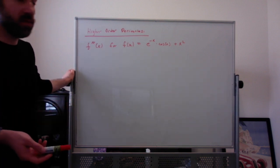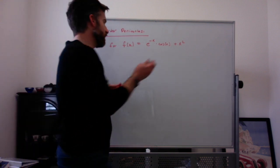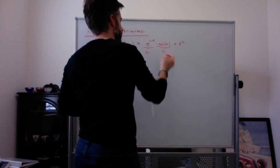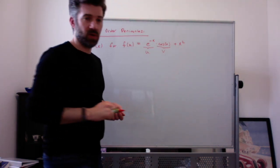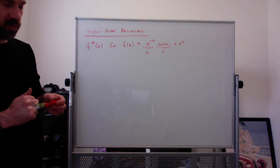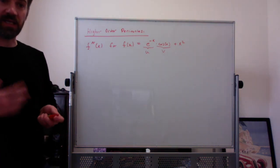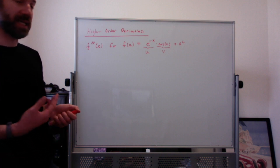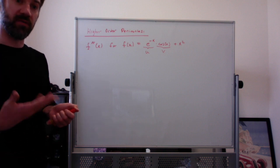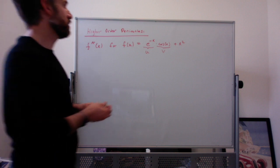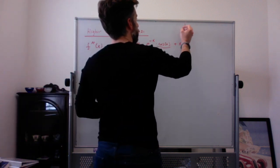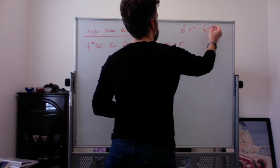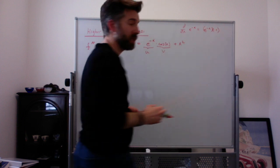We have a couple things going on here. One, we have a product rule — e to the negative x times cosine of x, think of that as u and v, and x squared. Also, e to the negative x is a little more special. The derivative of e to the x is e to the x. The derivative of e to the negative x is e to the negative x times the derivative of negative x, which is negative 1 — because of the chain rule.